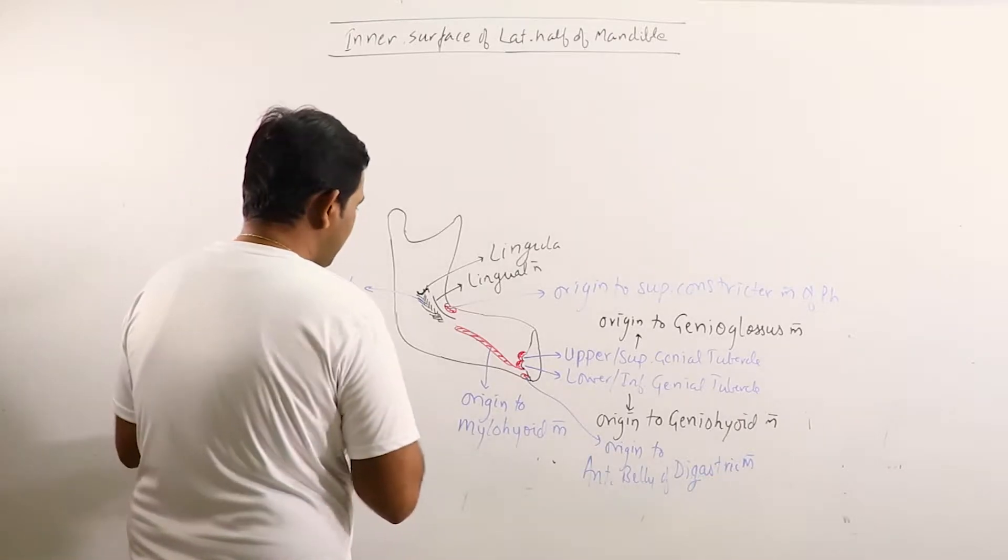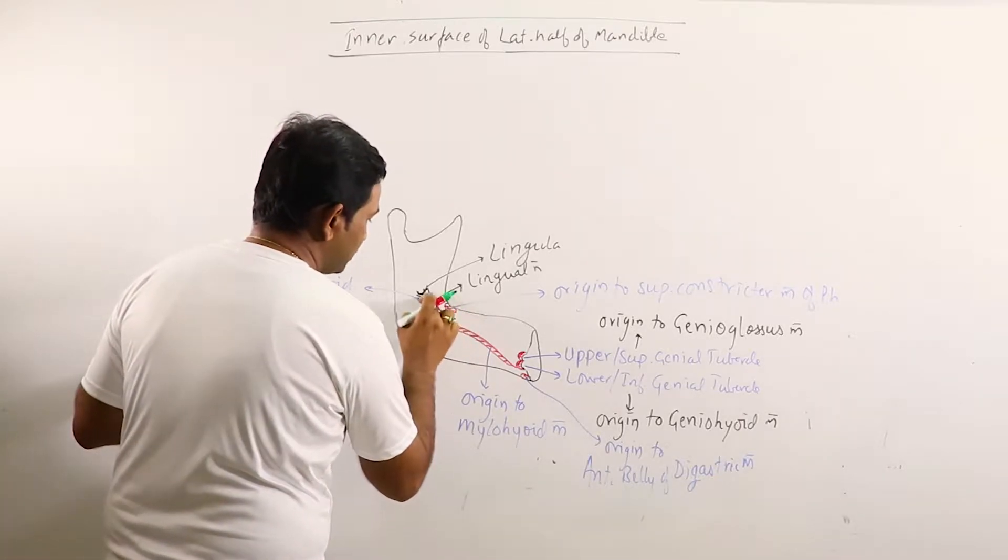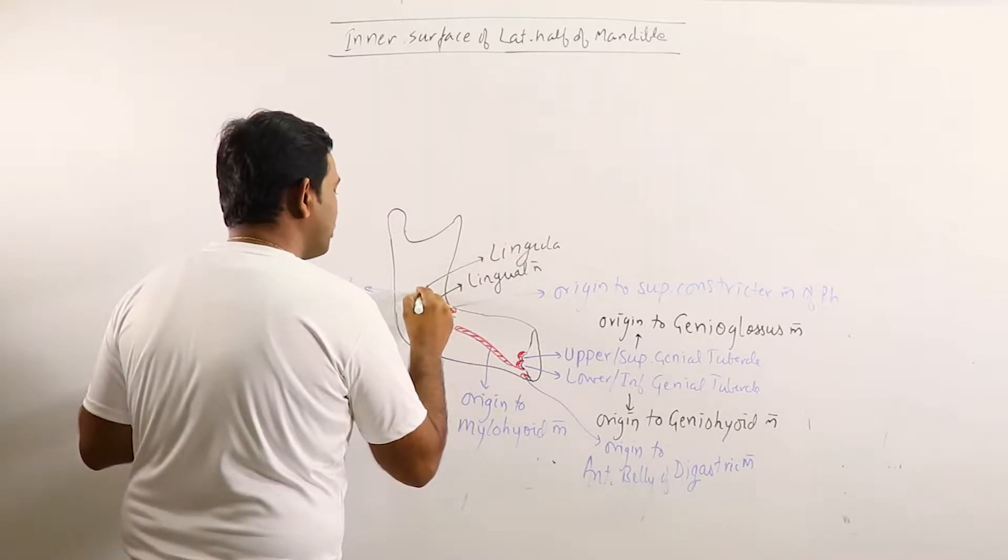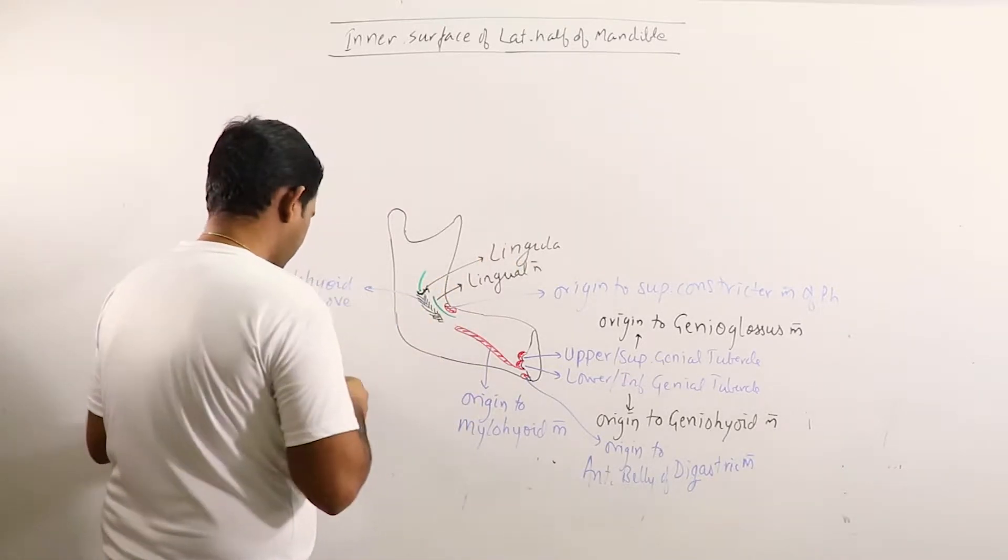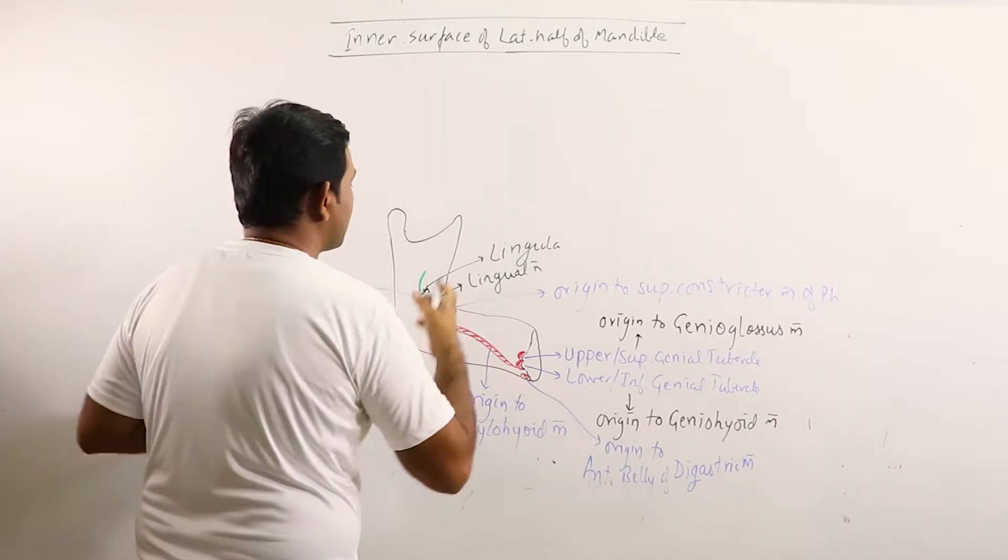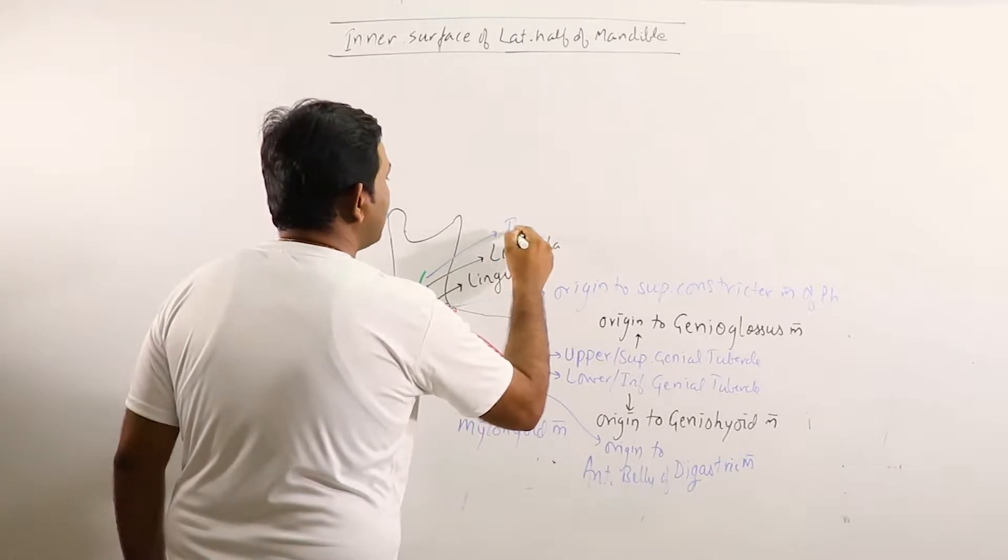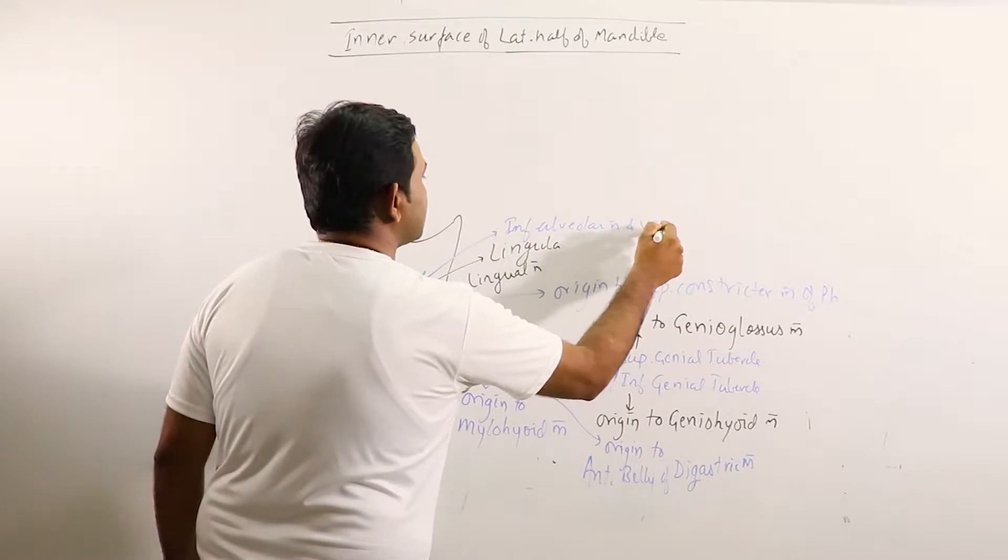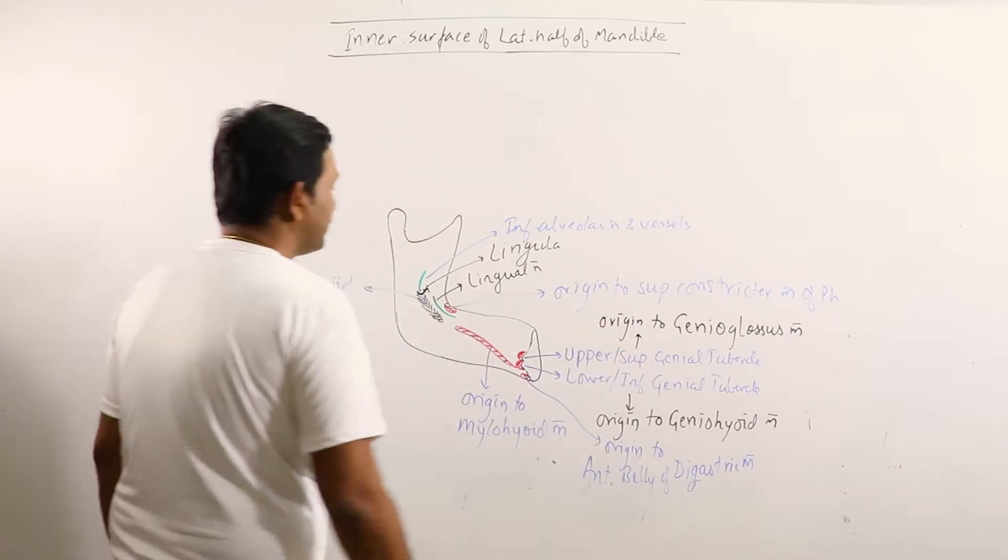Now from the mandibular foramen, this is lingual nerve, and from the mandibular foramen we can observe the inferior alveolar nerve and vessels enter it.